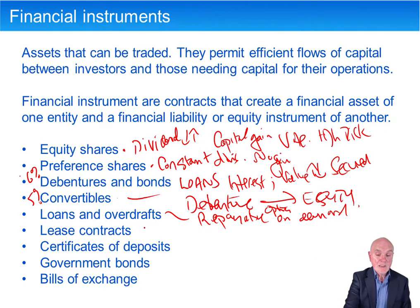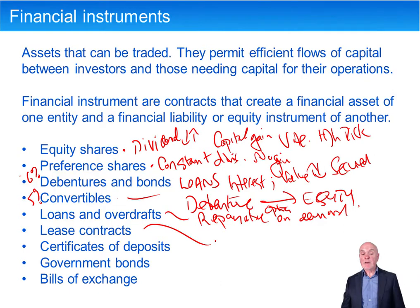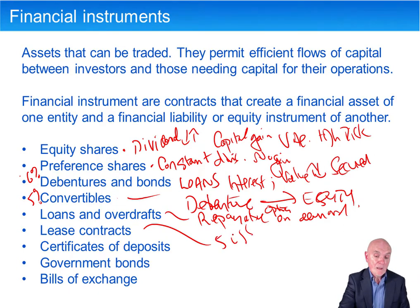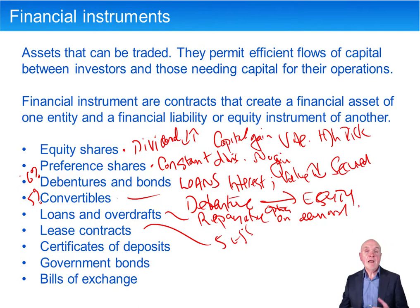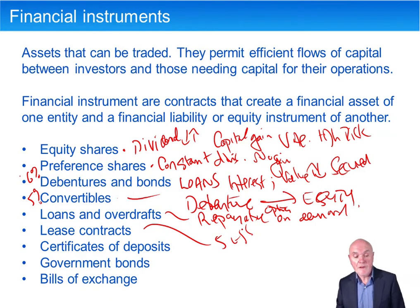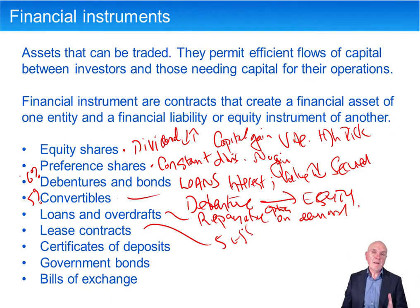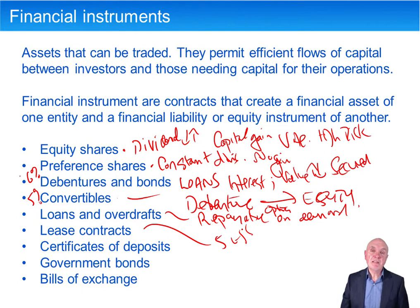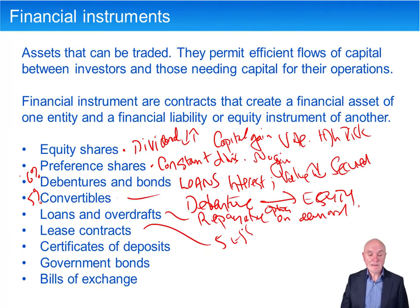Lease contracts are where you lease an asset rather than buying it, typically for something like five years. Common in machinery, vehicles, computers, and printing presses. Rather than having to borrow a lot of money to pay for the asset, you do a lease contract and pay an amount every month which allows you to use that asset.